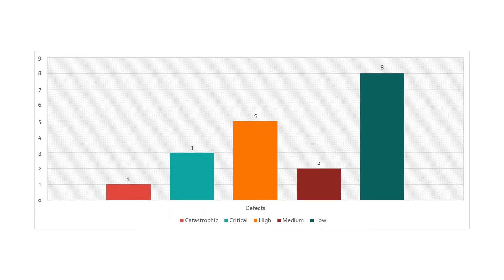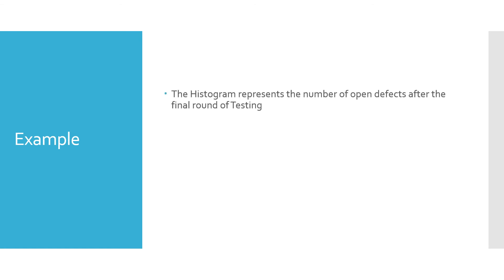Here is an example of a histogram. This histogram represents defects across five categories: catastrophic, critical, high, medium, and low. Instead of simply saying you have 19 defects, you have categorized them by their impact level, enabling clearer prioritization.